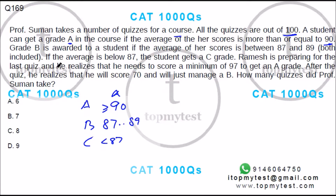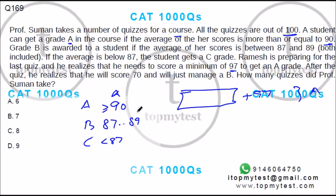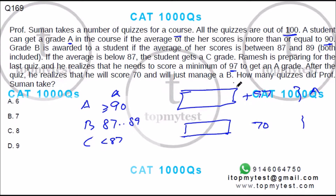Ramesh is preparing for the last quiz. He realizes that if he scores a minimum of 97 he will get grade A, meaning his overall average will be 90%. After the quiz, he realizes he scored 70, and to just manage a B he would need to score 87.